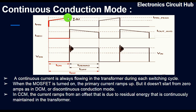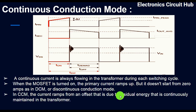This is the main advantage of CCM — continuous conduction mode. In CCM, the current ramps from an offset that is due to residual energy that is continuously maintained in the transformer. So the current doesn't start from zero amps; it starts from an offset current because there is some residual energy already stored in the transformer, and due to the inductance value, the transformer maintains that residual energy during its switching cycle.